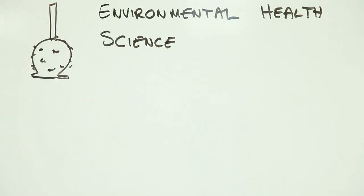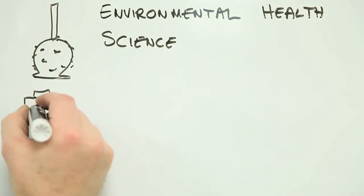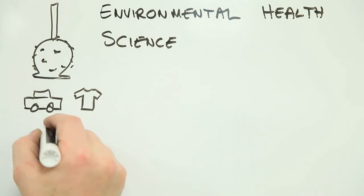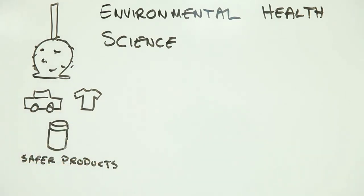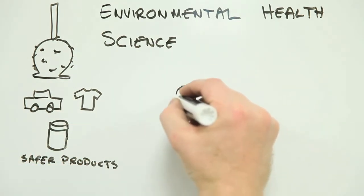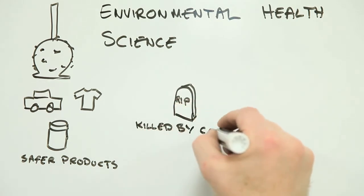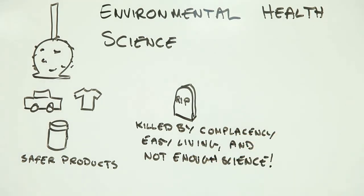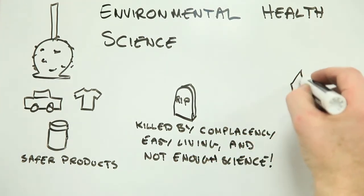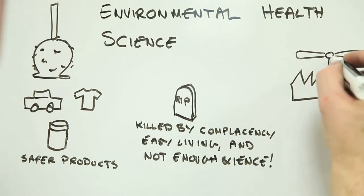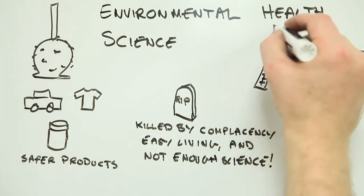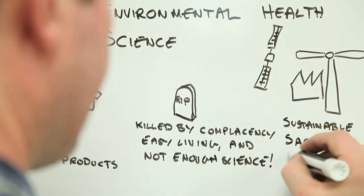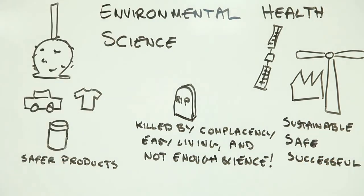By understanding the science behind how our environment affects our health, we can take some of the guesswork out of the decisions we make. This is incredibly important — not just for deciding whether to bite into an enticing caramel apple, but also for questions like: how can we develop safer products? How can we curb the rise of lifestyle diseases? Or how can we benefit from the gains of technological progress without suffering the pain of unintended health impacts?